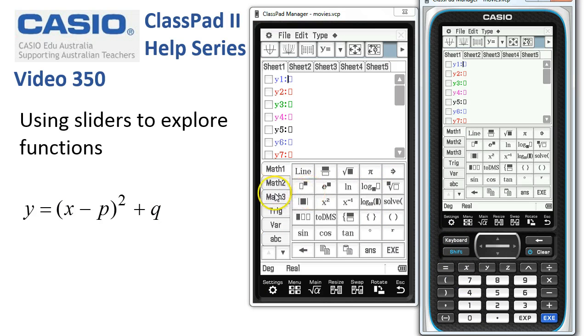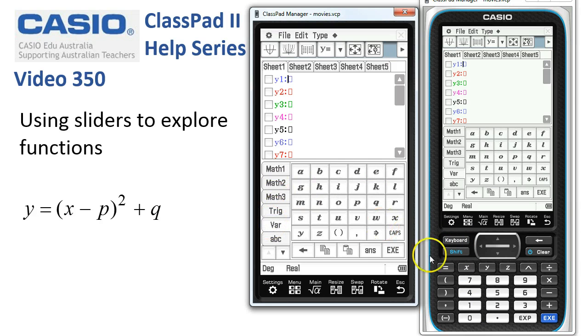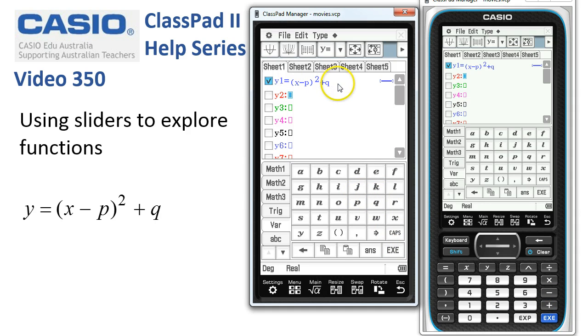And where are we? Variables, here we go. So brackets x minus p, close the brackets, to the power of two squared, plus q. And there it is. So when we tap execute, ClassPad tidies it up.